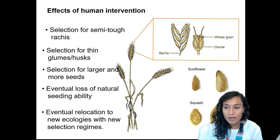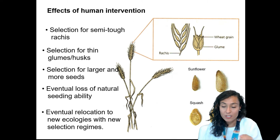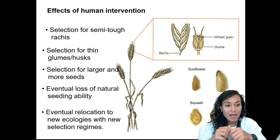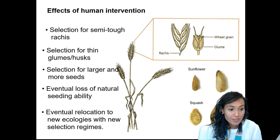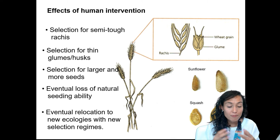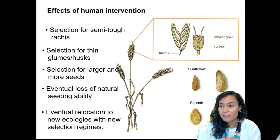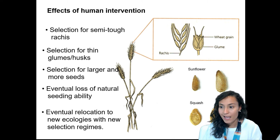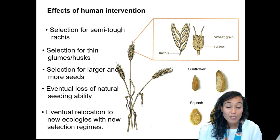Human intervention with the teosinte plant had several key effects. They selected for semi-tough rachises — the stalks connecting grain to the stem — and for thin glumes and husks allowing easy peeling and access to grains. They selected for larger and more numerous seeds to intensify harvest yield, and for plants most effective at distributing their own seeds. They also selected for types particularly resilient to being transferred to different climates and new ecologies.